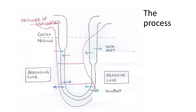So we've got this descending limb - the part that goes downwards - and then we've got the ascending limb going upwards. You can also see a network of capillaries surrounding the loop; in reality there would be many more capillaries than shown. You need to label the cortex, medulla, descending limb, ascending limb, and you can also see there's a thick part and a thin part to the limbs, and those are important to know.